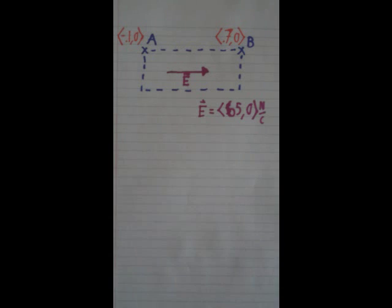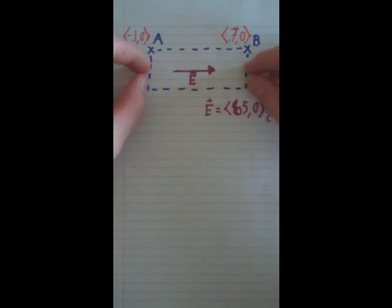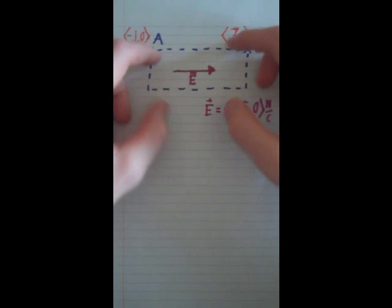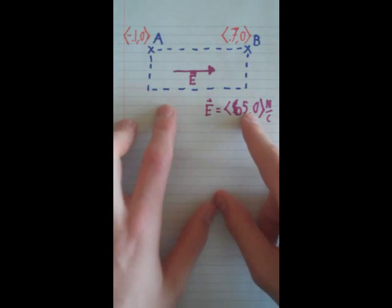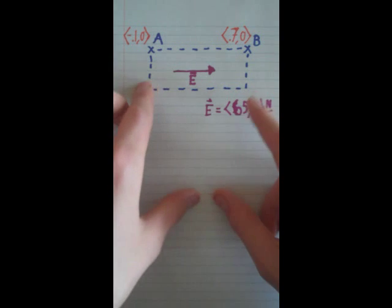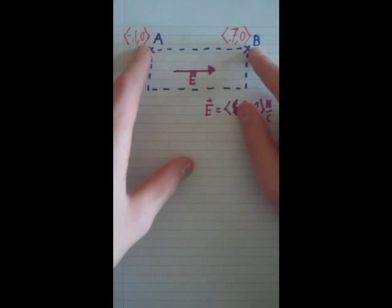Let's say we have an area like this where we have a constant electric field of 65 in the X direction, 0 in the Y direction. And we want to measure the electric potential from A to B.